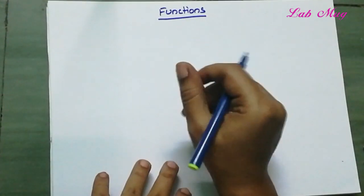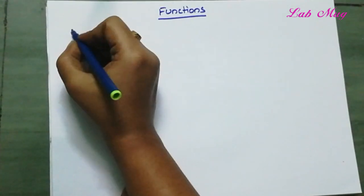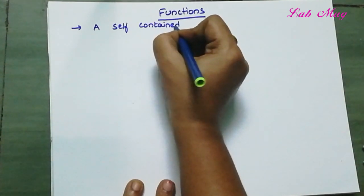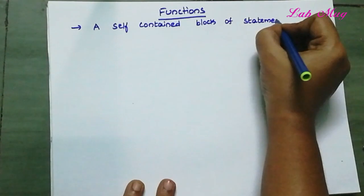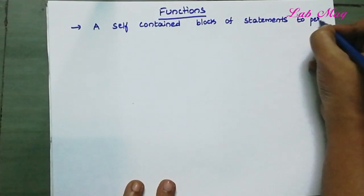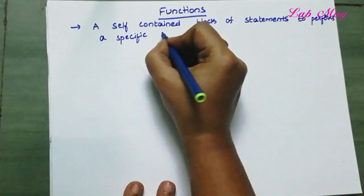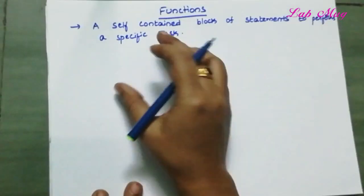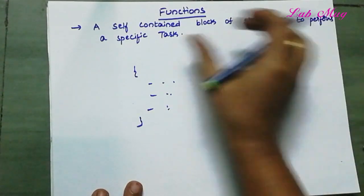Hi students. Last class we covered C language control structures, including jumping statements. Next, we are going to discuss a very very important concept: functions. So, the first definition — a self-contained block of statements to perform a specific task.